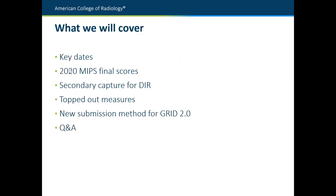Here's what we're going to cover today. We'll briefly touch on key dates for QCDR. We're going to talk about the 2020 MIPS final scores, which were released this month. We're going to go over a reminder about the secondary capture submission for DIR, then a reminder about topped out measures, and then we're going to spend the rest of the webinar covering the new submission method for GRID 2.0, and then we'll wrap up with Q&A.